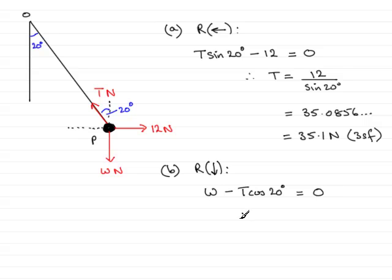Rearranging this for W, we see that W equals T cos 20 degrees. We know that T from the earlier part was 35.0856 and so on, so I'll just write that in: 35.0856 and so on. And that's going to be multiplied by the cosine of 20 degrees.